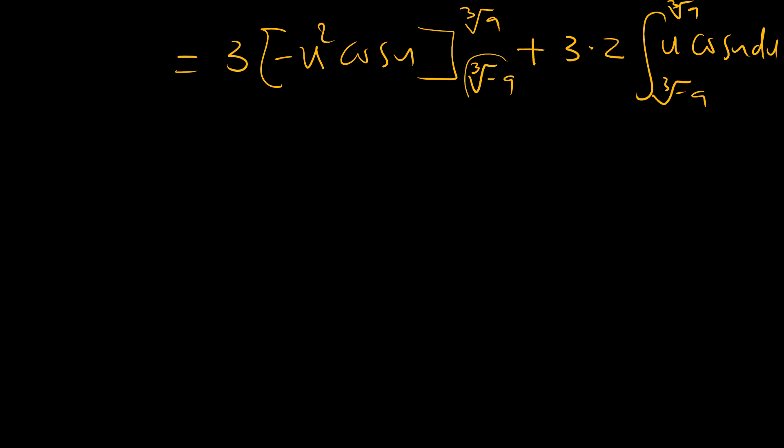So the cube root of negative 9 is the same as negative the cube root of positive 9. Since this part is a square, a negative and a positive will have the same value when you square them. Also, cosine of a negative is the same as cosine of the positive. So this entire part goes to zero, and our integral essentially boils down to the integral of 6u cosine u.